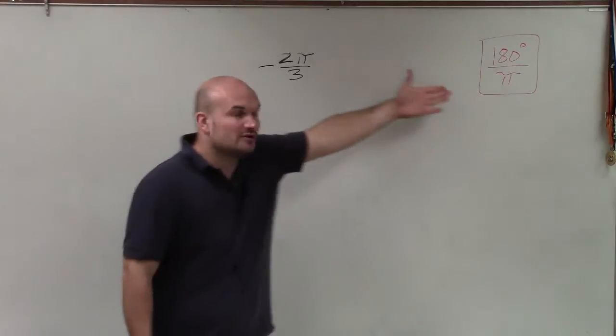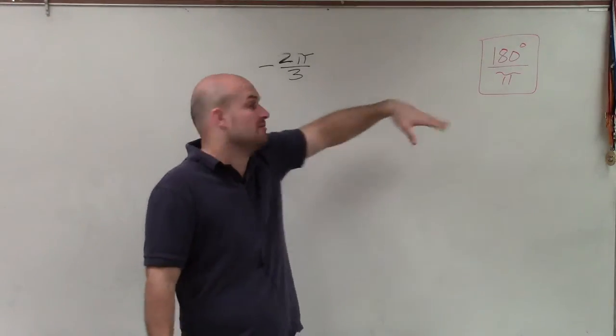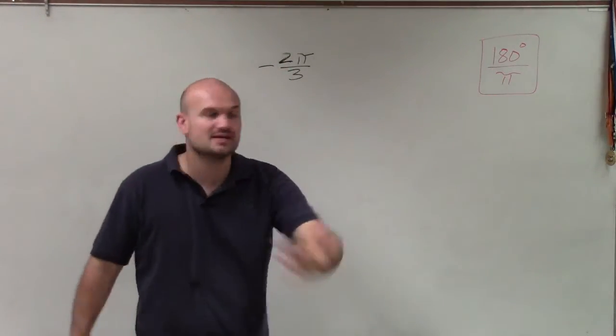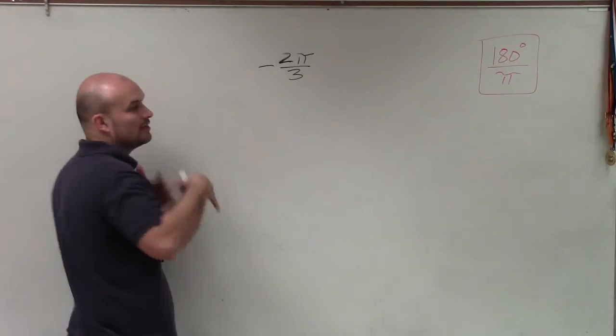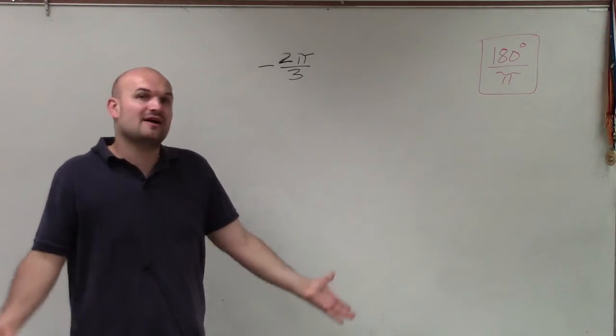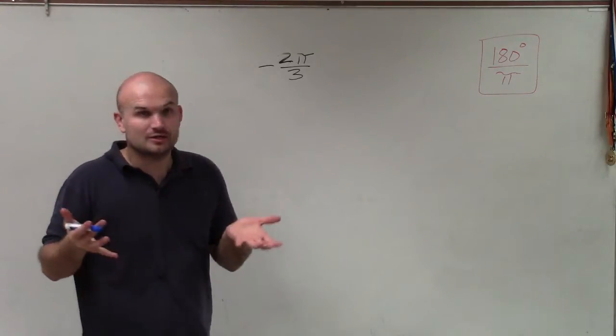To be able to do that, we look at our conversion of 180 degrees over π whenever we want to go from radians to degrees. All I'm going to do is take my angle and multiply it by that conversion fraction, and then simplify it so I can get my angle in degrees.